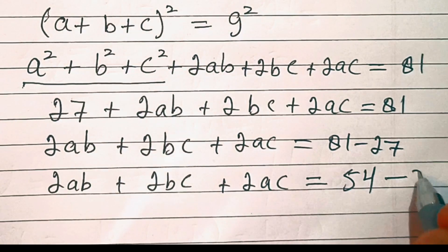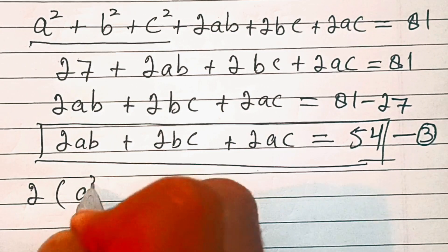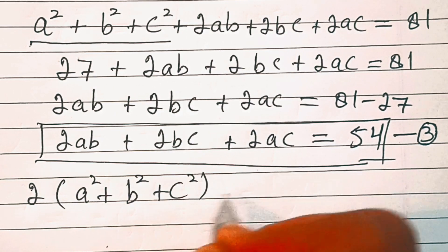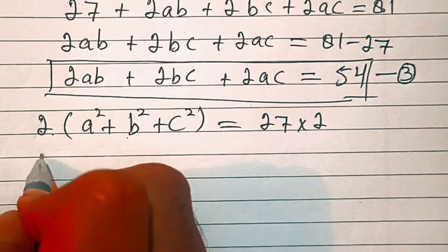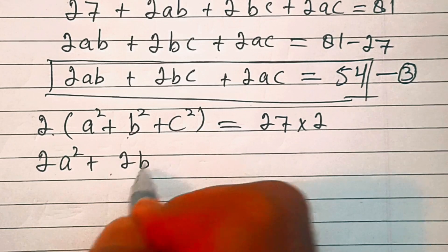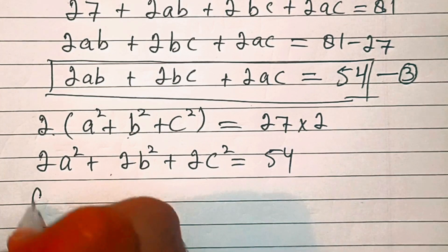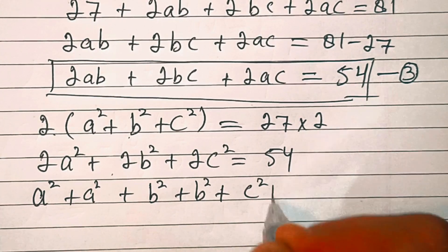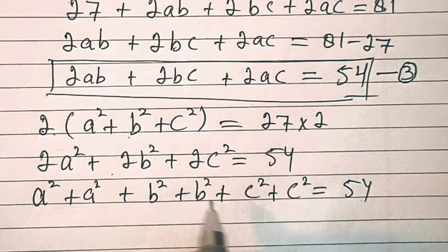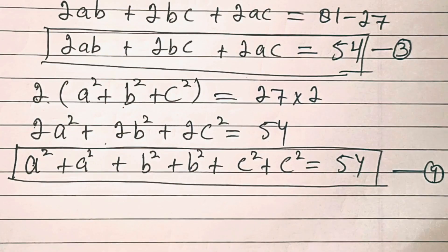Let's call this equation number three. After that, we will multiply equation one by 2 on both sides. So we'll have 2a² + 2b² + 2c² = 27 × 2 = 54. Now 2a² can be written as a² + a², similarly b² + b² + c² + c² = 54. Let's call this equation number four.